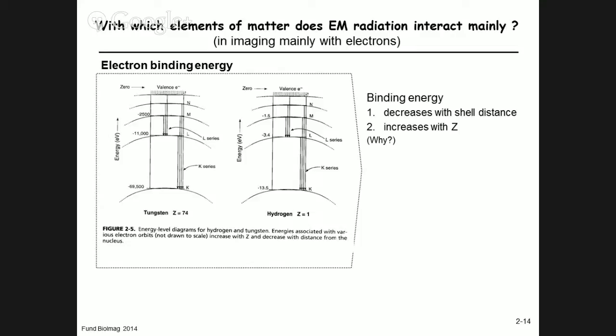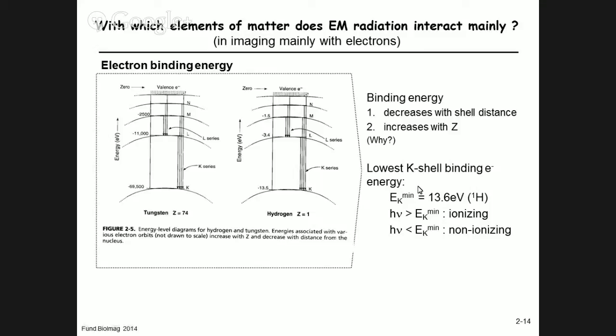If you have lots of protons — lots of positive charge — and you're the electron, the attraction is strong and it will take a lot of energy to pull you away. With distance, assuming Coulomb force, the closer the electron is to the nucleus the better it's held. K shell electrons are held most tightly; valence electrons have the lowest binding energy. That actually maps onto the lecture hall — people who want to leave sit in the last row. So it's basically Coulomb interaction behind it.